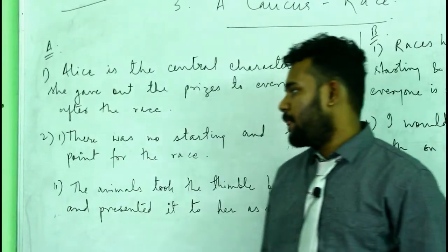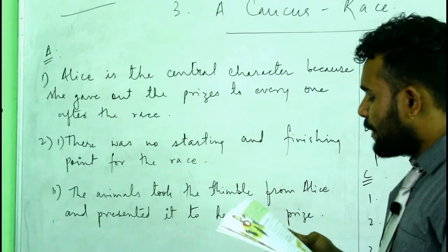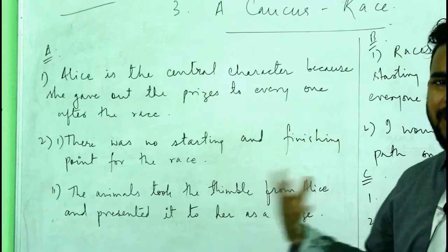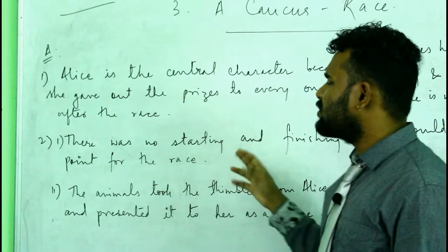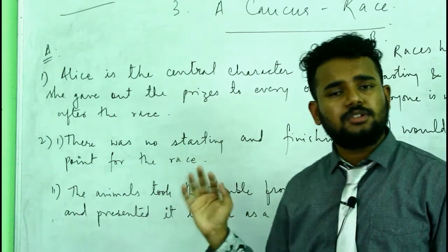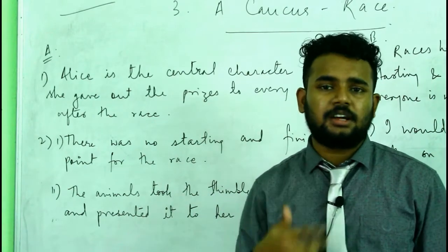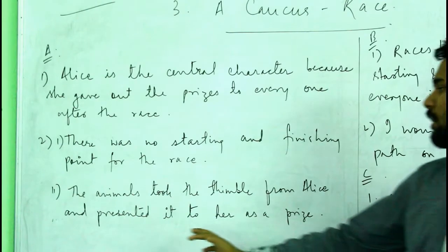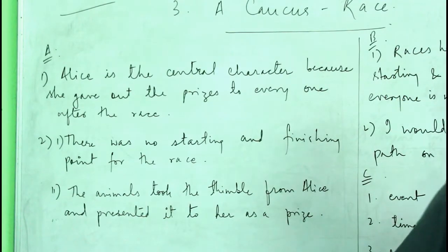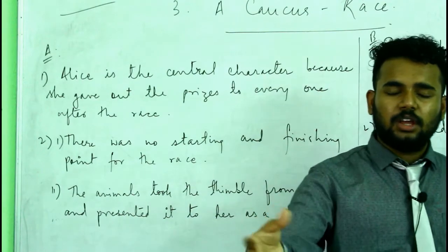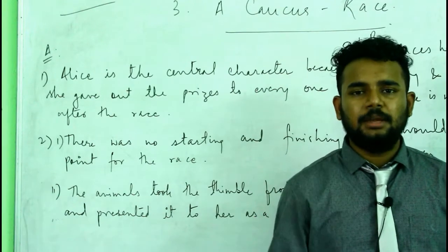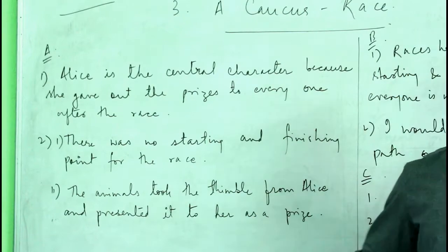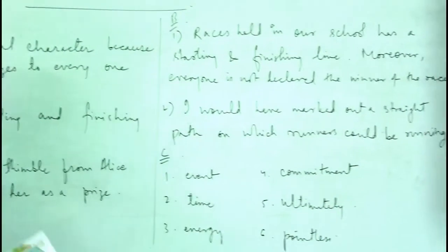The next question: describe two absurdities from the passage. Absurd means strange and odd. Number one: there was no starting and finishing point for the race — they were running in a circle. Number two: the animals took a thimble from Alice and presented it back to her as a prize, which is totally meaningless.